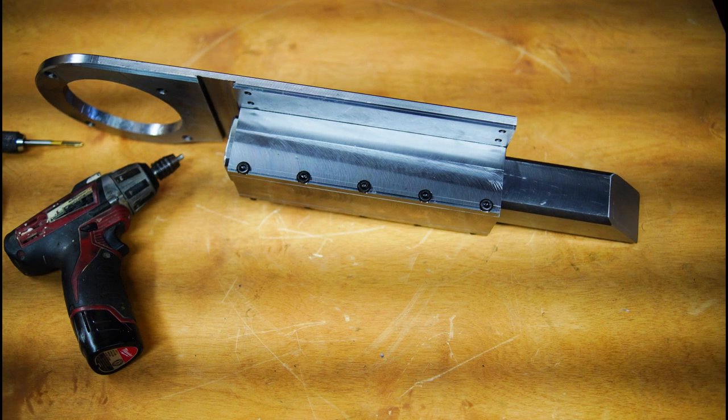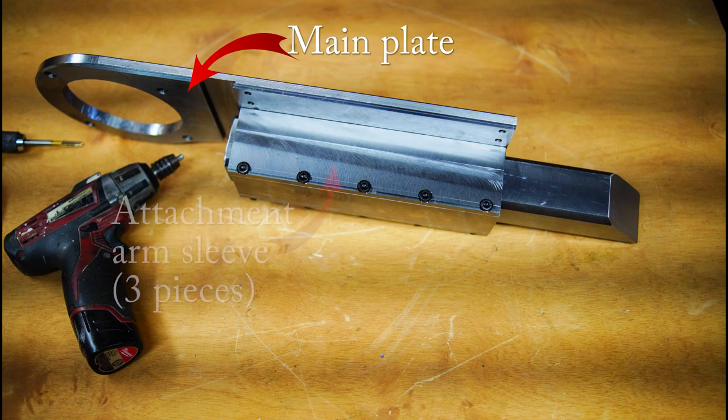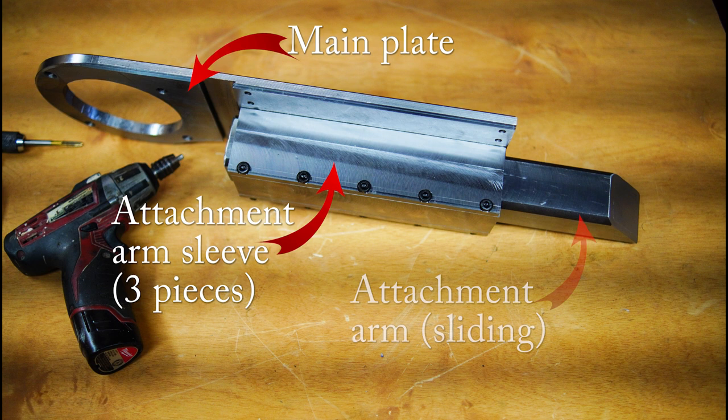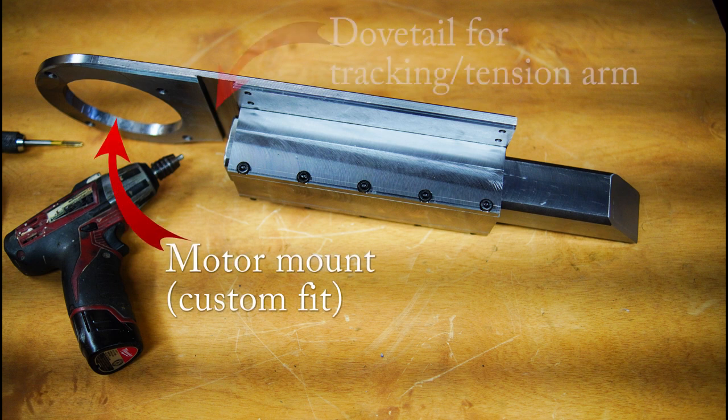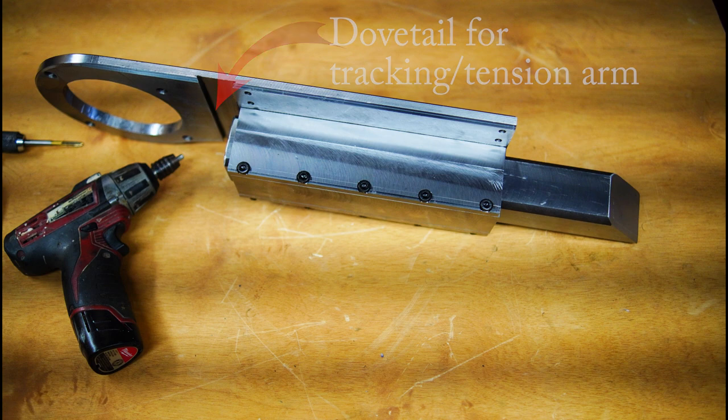Jumping ahead here's the part I'm actually going to make. It's a main plate with the attachment sleeve in three pieces and that holds the attachment arm that slides back and forth in that sleeve. The main plate has this motor mount feature as well as a dovetail that's going to hold the tracking arm.